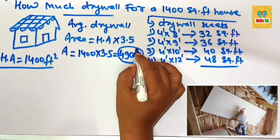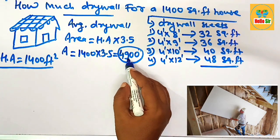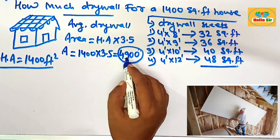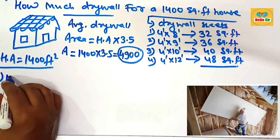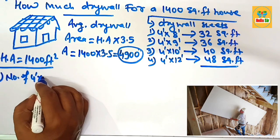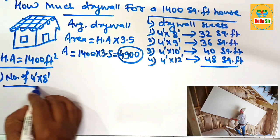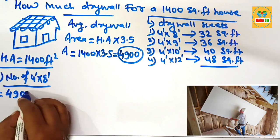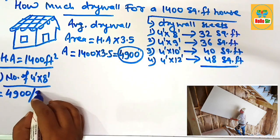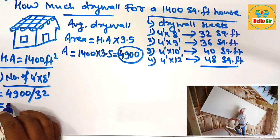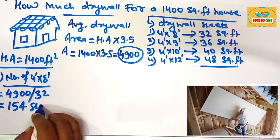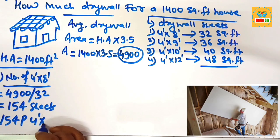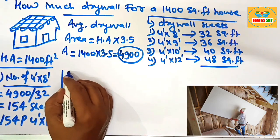That gives 4900 square feet, meaning you roughly need 4900 square feet of drywall area for a 1400 square foot house. Now, to figure out the number of 4-foot by 8-foot drywall sheets required: take the total area of 4900 divided by one sheet area of 32. After division, this comes to about 154 sheets. So you need approximately 154 pieces of 4-foot by 8-foot drywall sheet to cover that area.